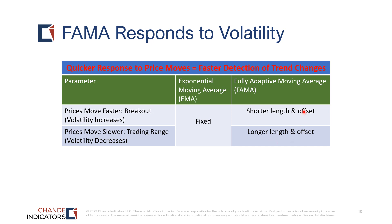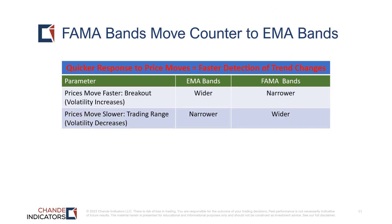FEMA bands move counter to EMA bands: when volatility increases, EMA bands are wider but FEMA bands are narrower; when volatility decreases, EMA bands are narrower but FEMA bands are wider. So you can take advantage of that contrasting behavior.